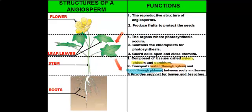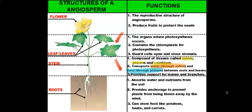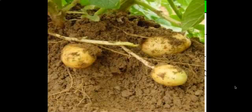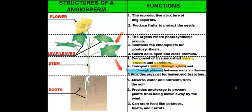That brings us to our last structure of angiosperms — the roots. The root's main job is to absorb water and nutrients from the soil. They also provide anchorage to prevent the plant from being blown away by the wind. A third function of the root is to store food — starch is stored in structures like potatoes, which are grown underground and called tubers. If you eat a beet or carrots, you're eating the roots of these plants that have stored starch in them.